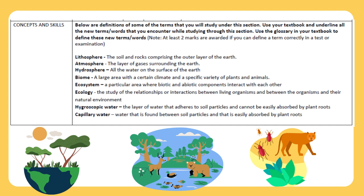Key definitions: Lithosphere — the soil and rocks comprising the outer layer of the earth. Atmosphere — the layer of gases surrounding the earth. Hydrosphere — all the water on the surface of the earth. Biome — a large area with a certain climate and a specific variety of plants and animals. Ecosystem — a particular area where biotic and abiotic components interact with each other. Ecology — the study of relationships or interactions between living organisms and between organisms and their natural environment. Hygroscopic water — the layer of water that adheres to soil particles and cannot be easily absorbed by plant roots. Capillary water — water found between soil particles that is easily absorbed by plant roots.